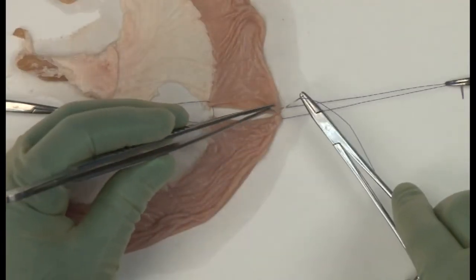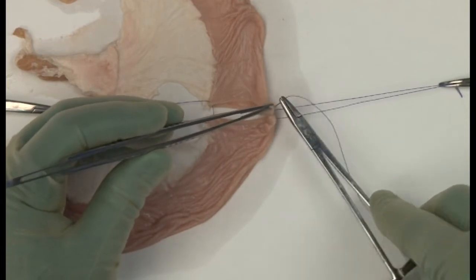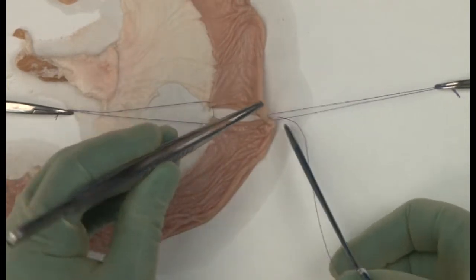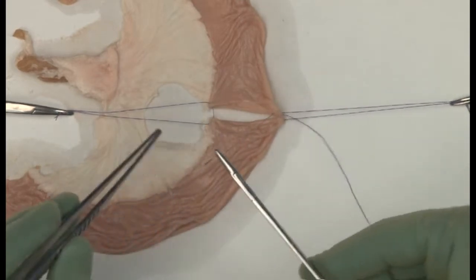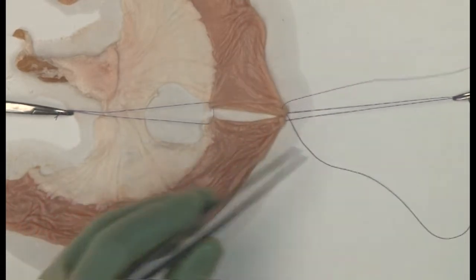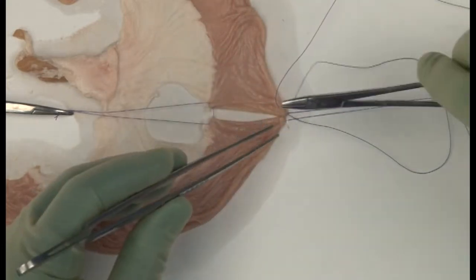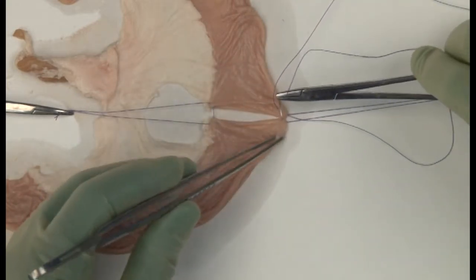And now we have the bowel nicely controlled and set up for an interrupted sutured anastomosis using a braided absorbable 3-0 suture. For practice you should hand-tie all the knots with carefully laid reef knots.